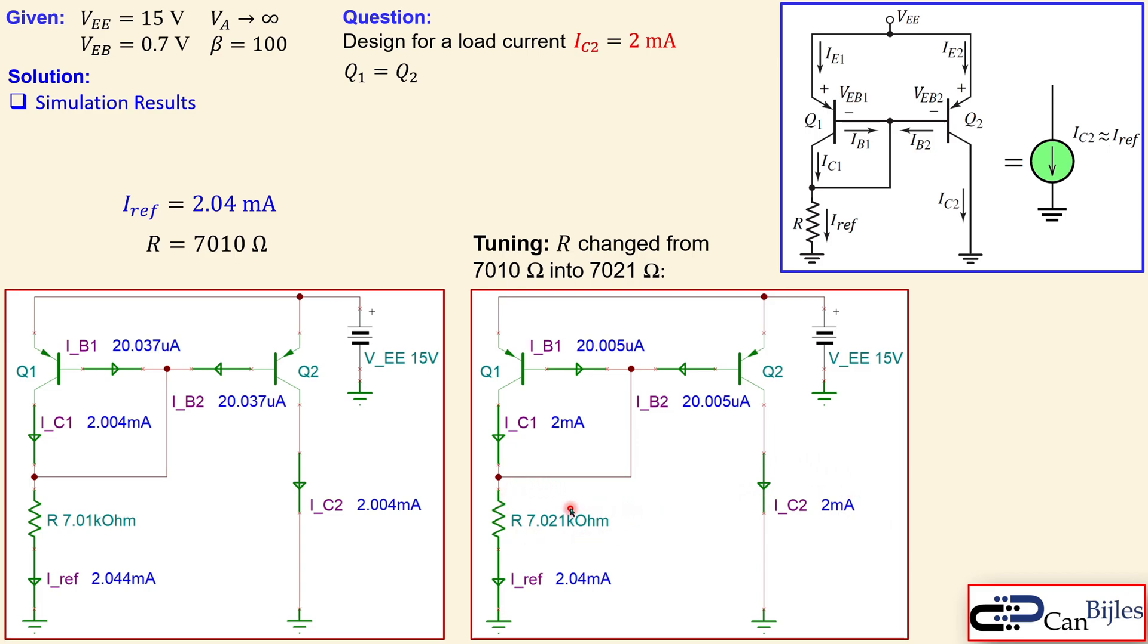But the resistor is just adjusted by 11 ohms up. And then we have also the same reference current. So then the design is complete. And of course, again, this is just to make it to show that what you need to do in order to get the exact value for your load current, required load current.